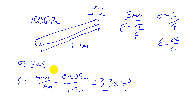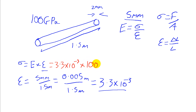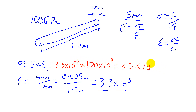Now we take this strain value and multiply it by our value for the Young's Modulus to get the stress. So we have 3.3 × 10⁻³ times 100 gigapascals, which is times 10⁹. That gives us 3.3 × 10⁻³ × 10¹¹ — taking 3 back off the exponent — which works out as 3.3 × 10⁸ pascals. So our stress is 3.3 × 10⁸ pascals.